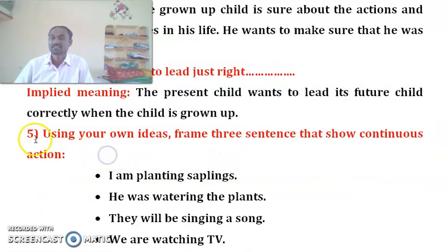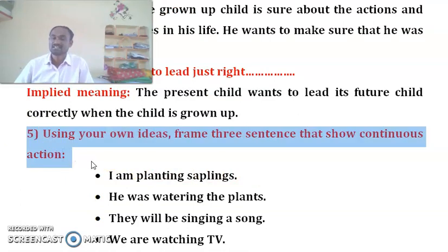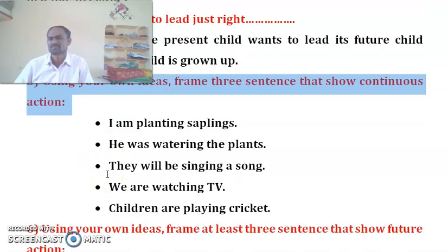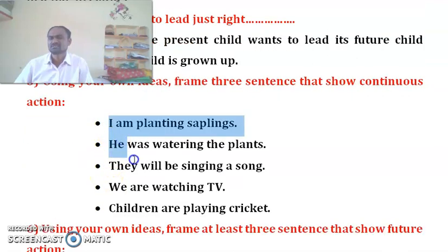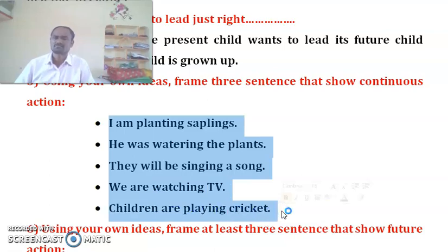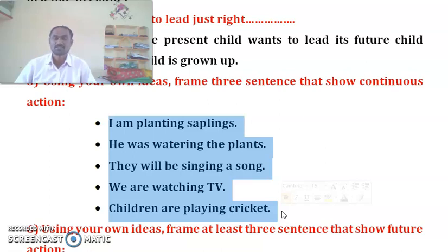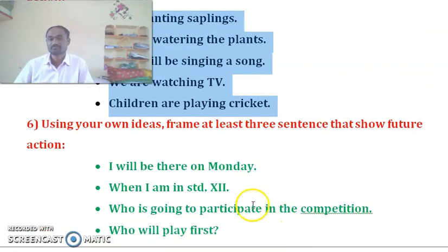Question number 5 in English workshop: Using your ideas, frame 3 sentences that show continuous actions — meaning continuous tense. You can frame them on your own. Examples: I am planting saplings. He was watering the plants. They will be singing a song. We are watching TV. Children are playing cricket.